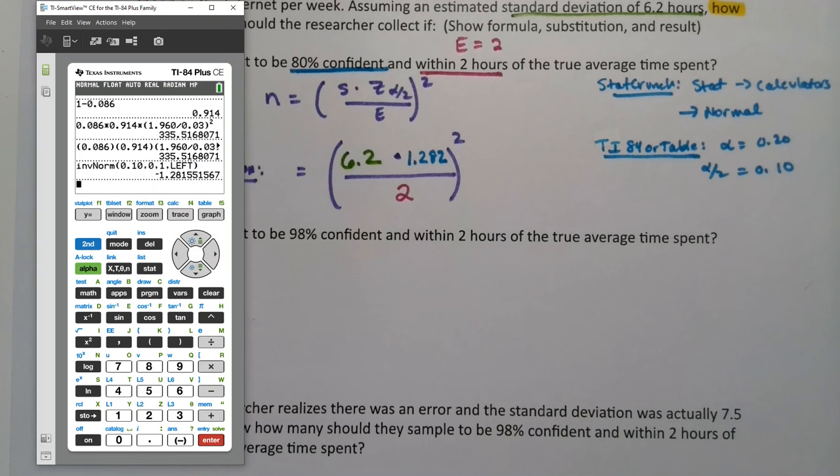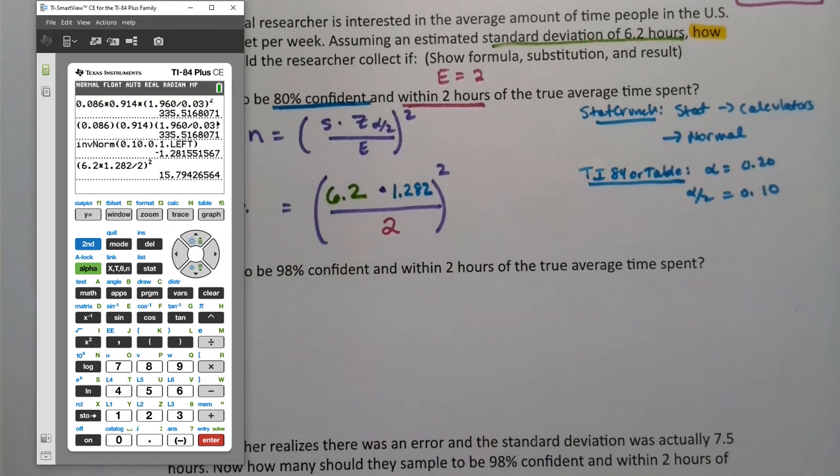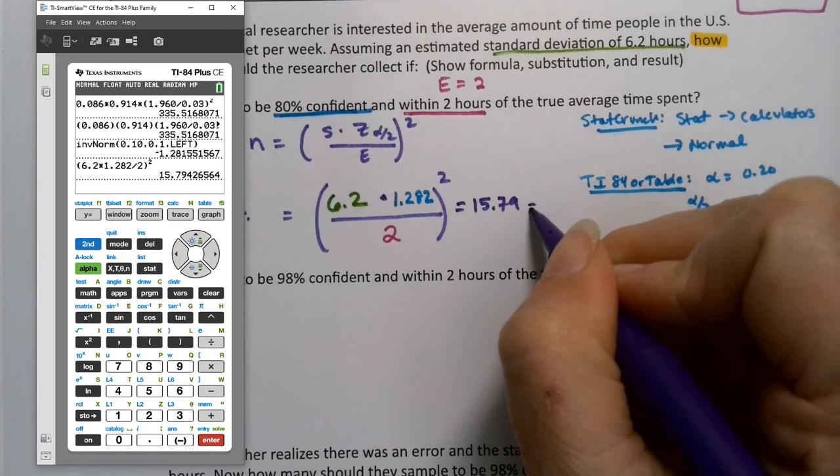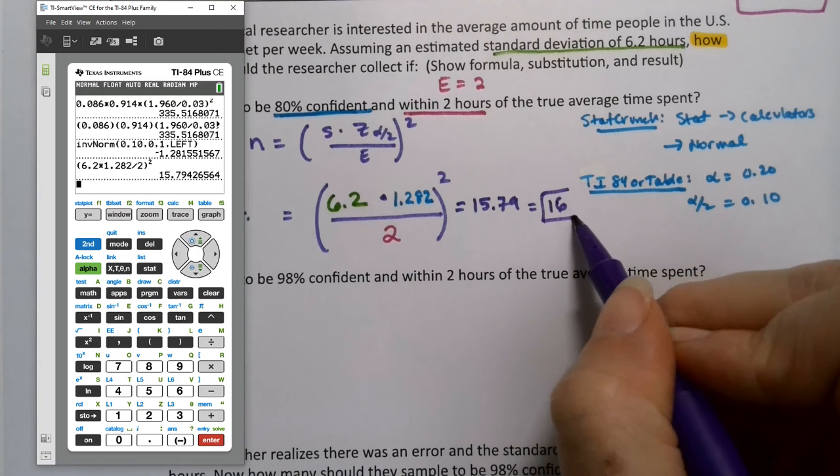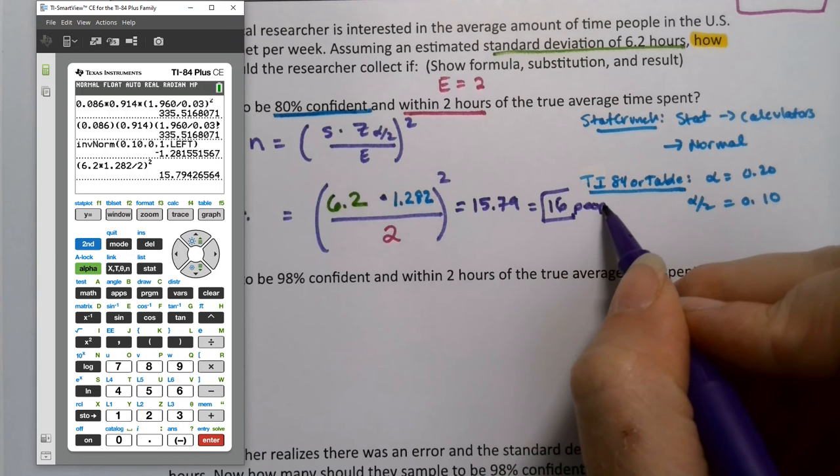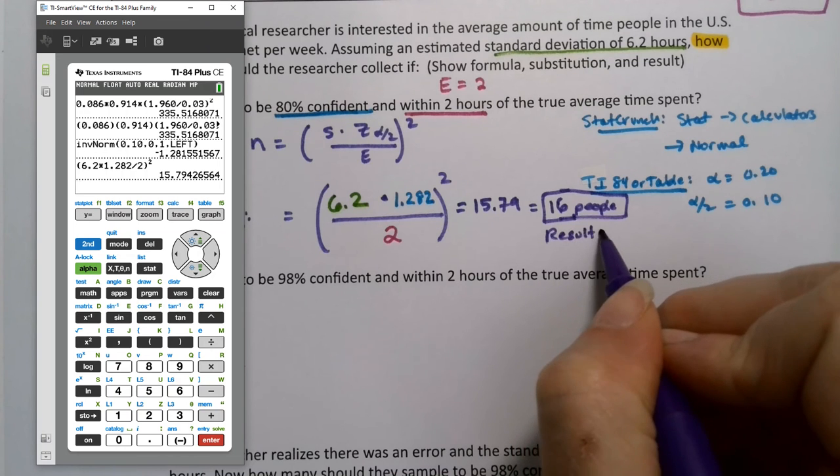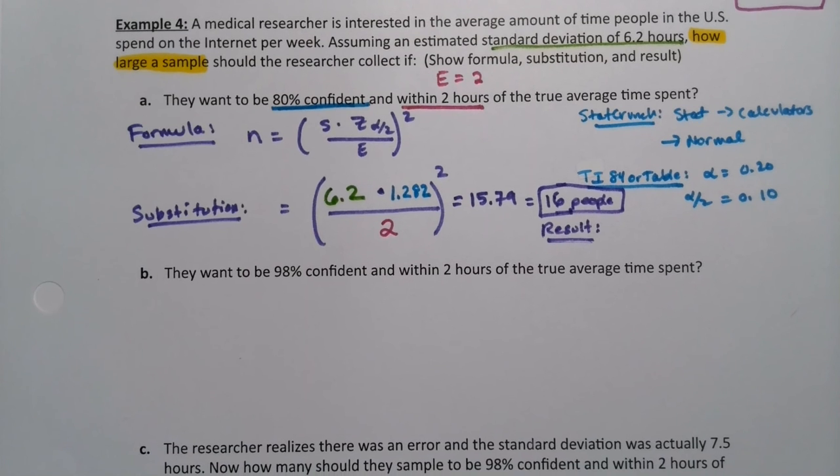So now we have to type all that in. Parentheses, 6.2 times 1.282 divided by two, close parentheses squared, enter. And it needs 15.799 people. That's fine. Don't freak out. Sometimes these are a little bit smaller than what we would have for proportions. Proportions and surveys would never be that small. But for means that happens. So it's 16 people. That's our results.